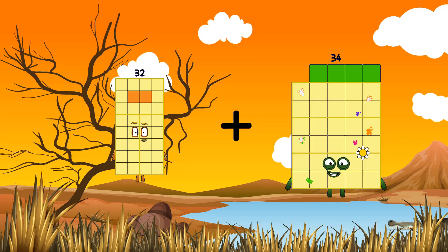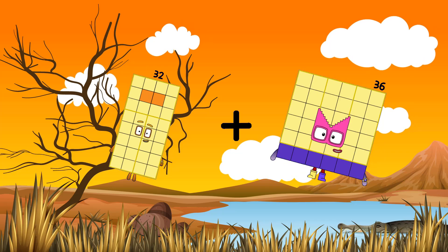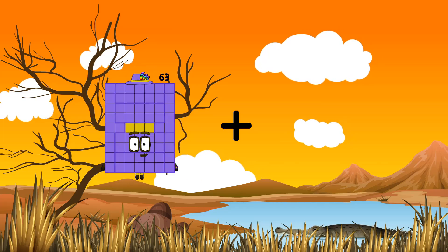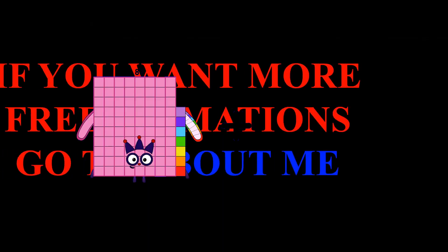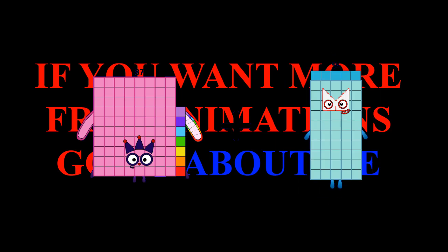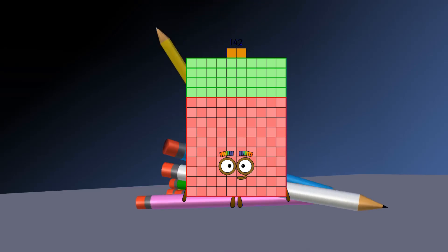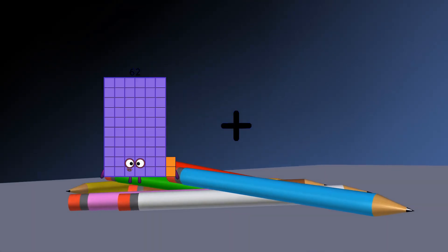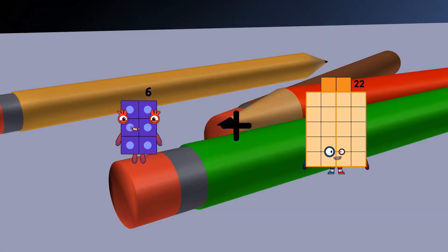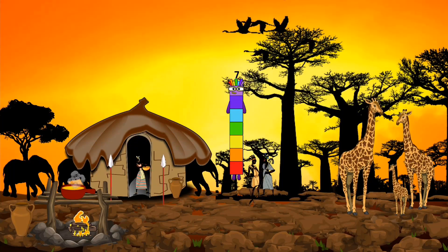32 plus 36 equals 68. 87 plus 55 equals 142. 6 plus 1 equals 7.